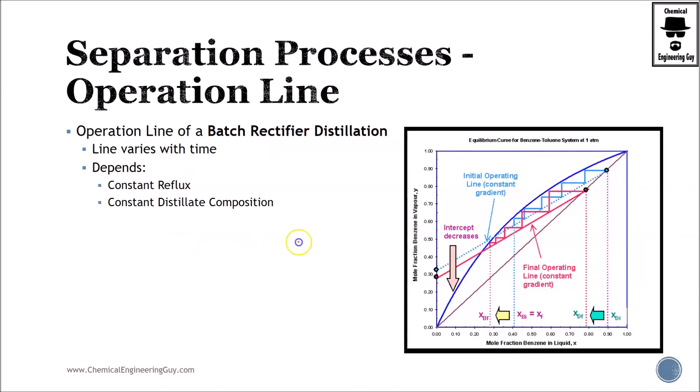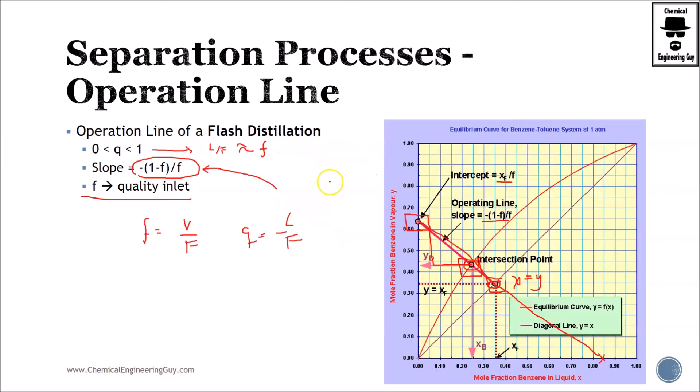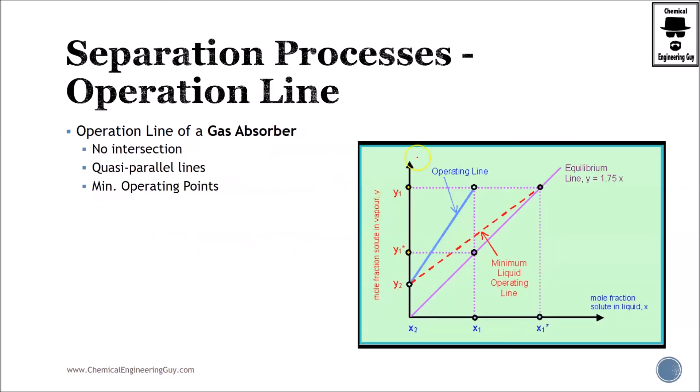As stated before, we have several types of operation lines. I just wanted to show you this batch rectifier distillator. It will depend on the type of operation, whether or not you're using constant reflux or constant distillate composition. I love this case because in this case, time changes conditions. So you're going to have a shift in the operation line. The operation changes with respect to time. And here, operation does not depend with time because this is a continuous process.